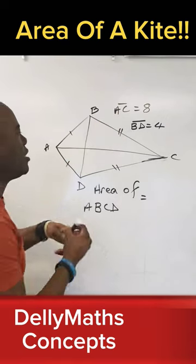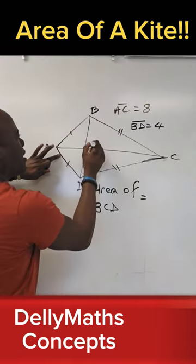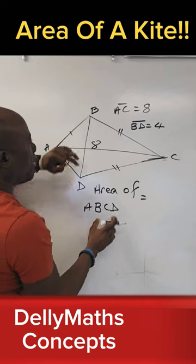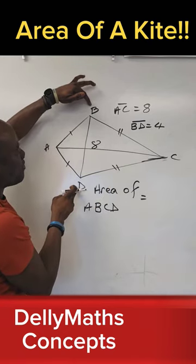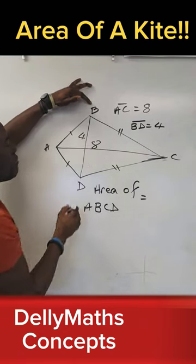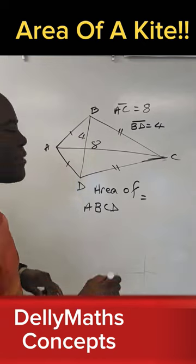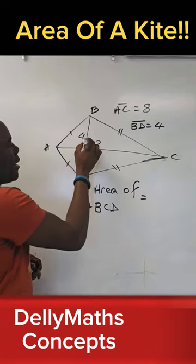We're given AC, which is one of the diagonals—AC is 8—and BD, the other diagonal, is 4. The unique thing about a kite is that the diagonals intersect at a right angle.